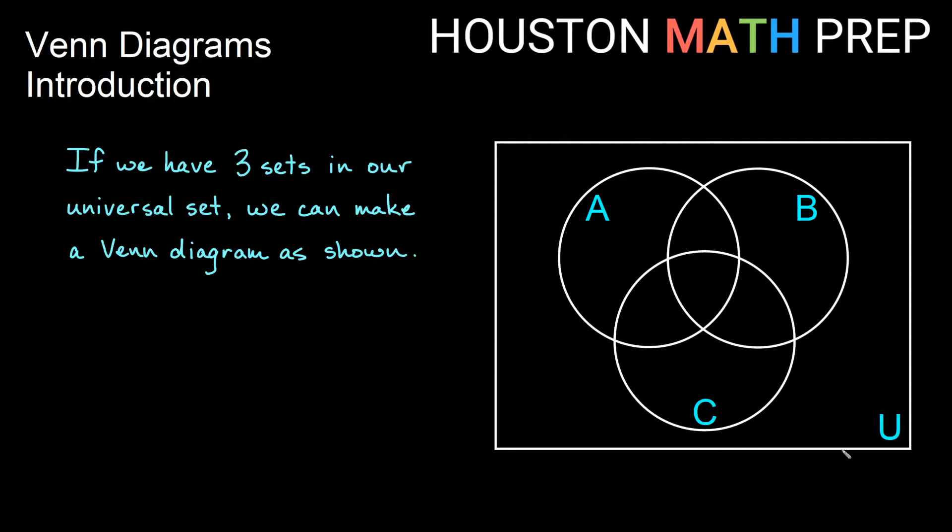This is sets A, B, and C inside of our universal set. You'll notice that we end up with double the amount of regions when we add this third set. We end up with eight regions. Here I've labeled all of them.